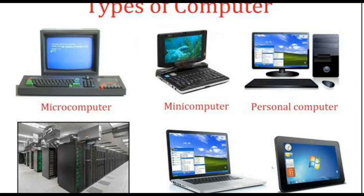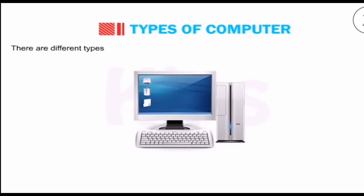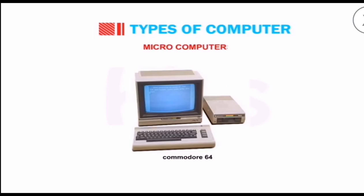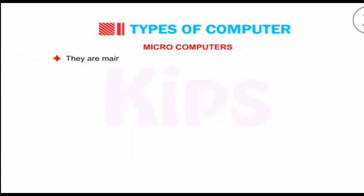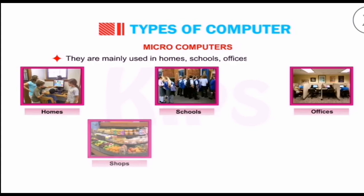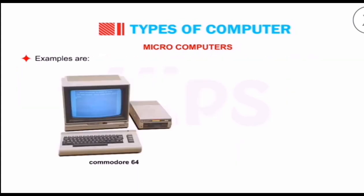Now let us move to the types of computers. There are different types of computers with respect to their size, speed, storage capacity, and cost. The first is microcomputers. These are very small in size and less in cost. They are usually designed for personal use, that's why they are called personal computers. They are mainly used in homes, schools, offices, shops, and banks. The best examples of personal computers are Commodore 64 and IBM PC.